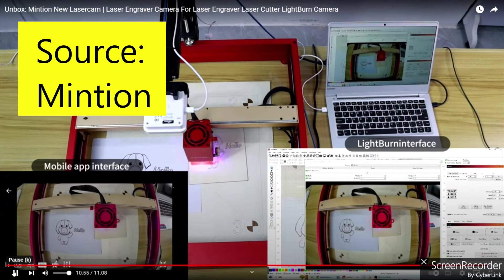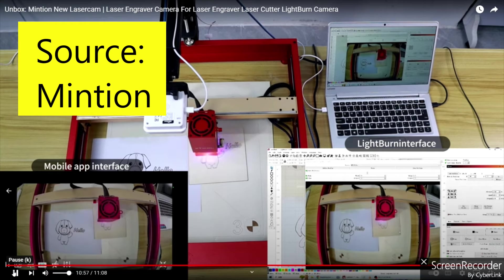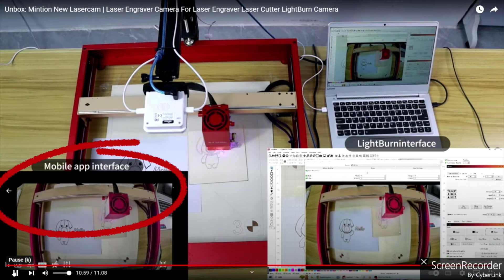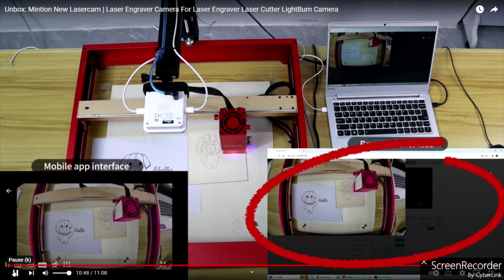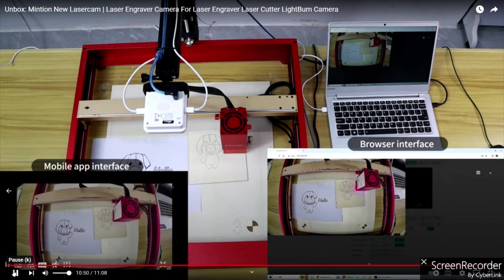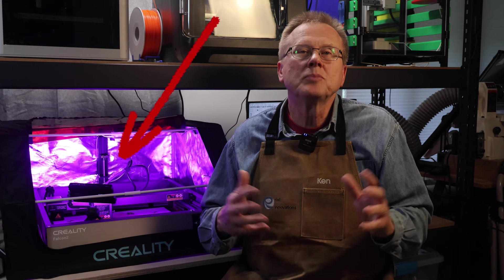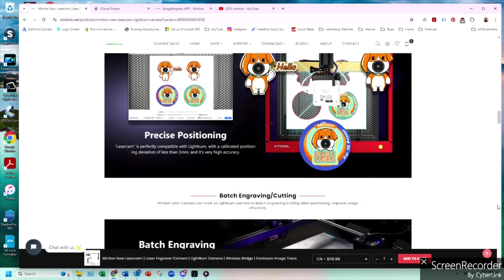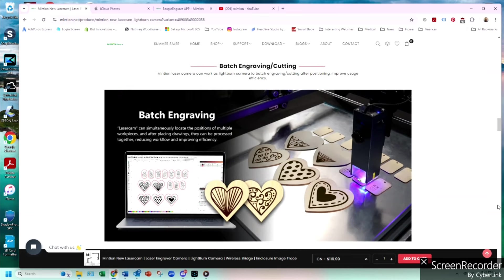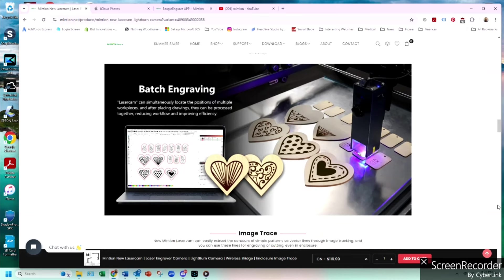The camera allows you to remotely monitor your laser engraver via the Beagle Engraved phone app, the Lightburn camera control, or the Minchian browser interface. The camera is designed to fit inside most laser engraver enclosures. The camera precisely locates your work pieces so you can quickly align your images to cut or engrave. And it also allows you to perform batch engraving and cutting to increase your productivity.